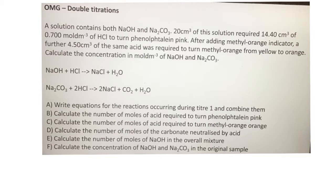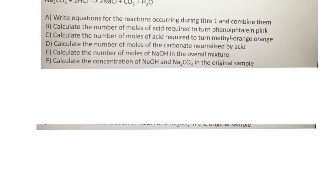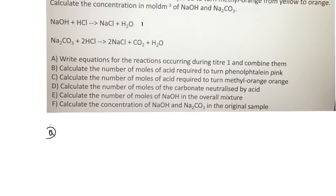The first thing we're going to look at is writing the reactions occurring during Titer 1 — working out what is happening in that first titration. So let's look at part A first. In Titer 1, reaction 1 happens in one stage.